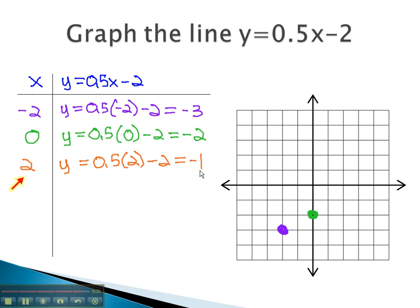When x is 2, y is negative 1. 2 to the right, 1 down.